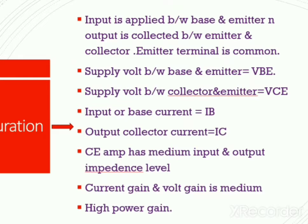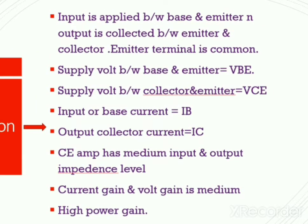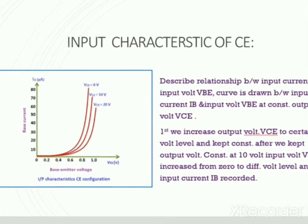The supply voltage between base and emitter is denoted by VBE, and the supply voltage between collector and emitter is denoted by VCE. The input or base current is denoted by IB, and the output or collector current is denoted by IC. The common emitter amplifier has medium input and output impedance, medium current and voltage gain, and high power gain.